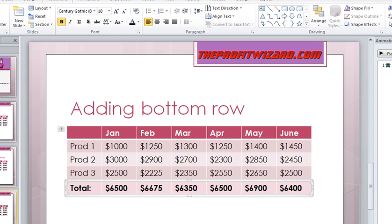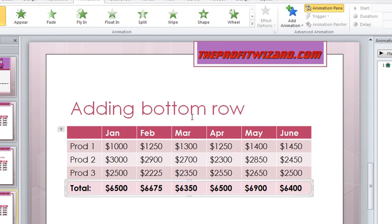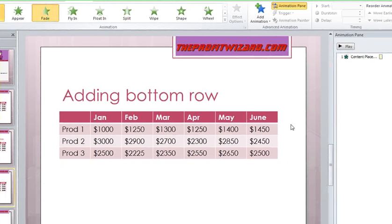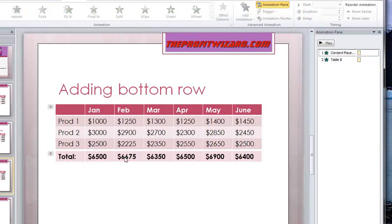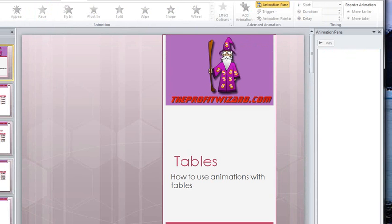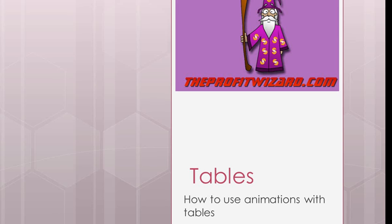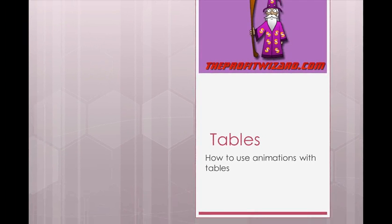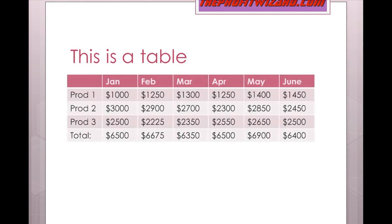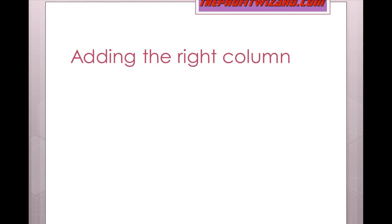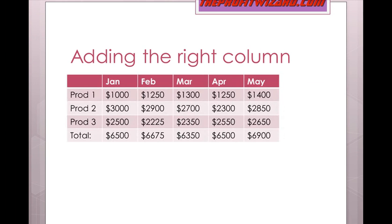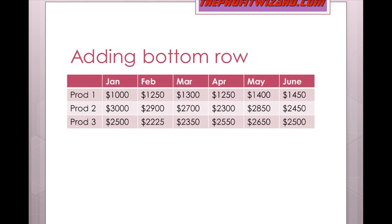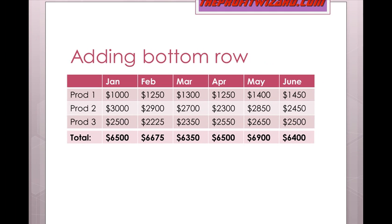So now if we go back here, we can go to Animations, go Fade. When we look at the different options and go right back to the beginning: we've got this table where the whole lot fades at once; this one where the first part fades in and then the second part; and this one where all of it fades in and then the totals afterwards.